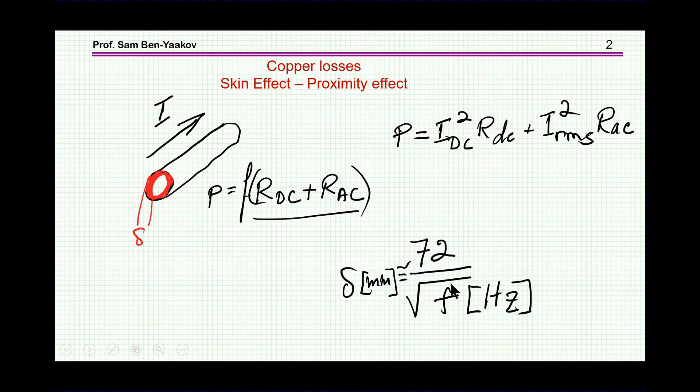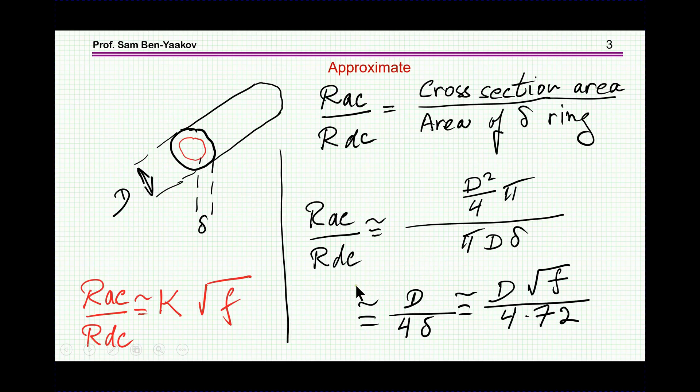So if we look at the RAC over RDC expression, RAC is the resistance due to this section here, RDC is due to the whole area. Now the conductance is a function of area. The larger the area, the larger the conductance, and the resistance is one over conductance.